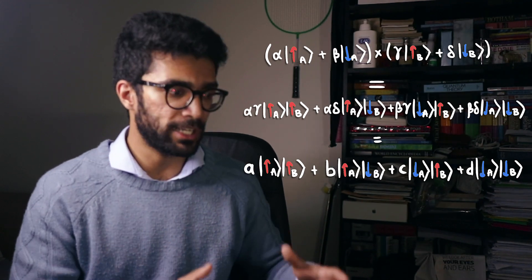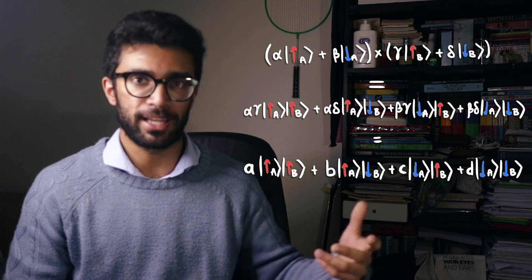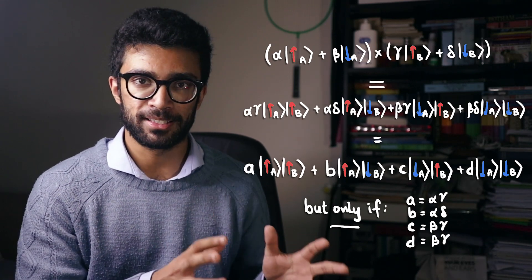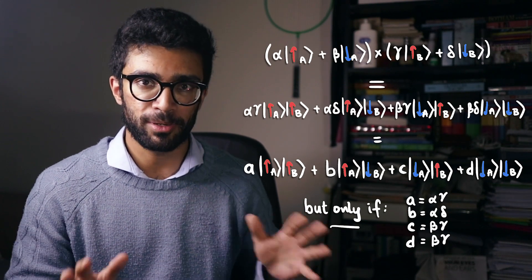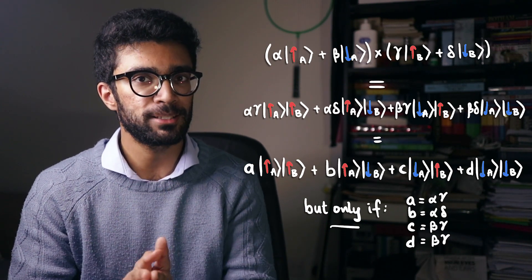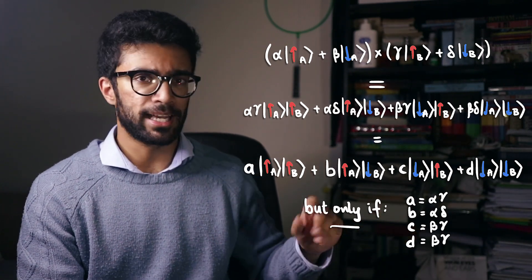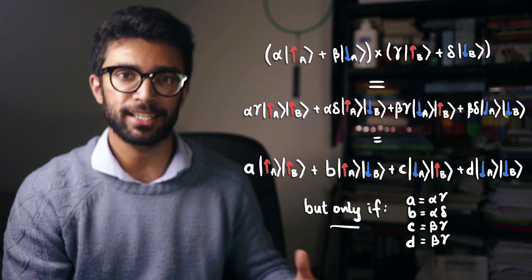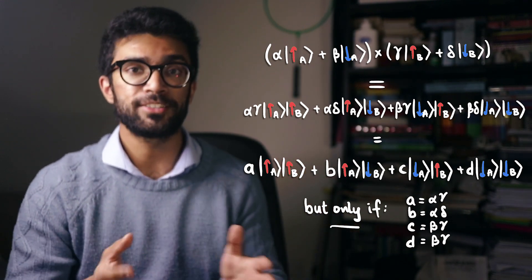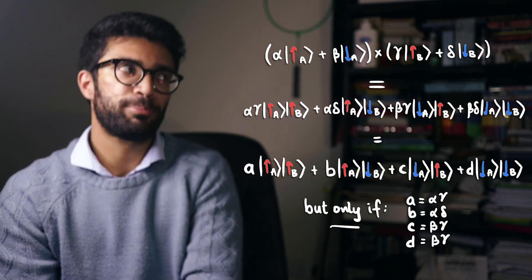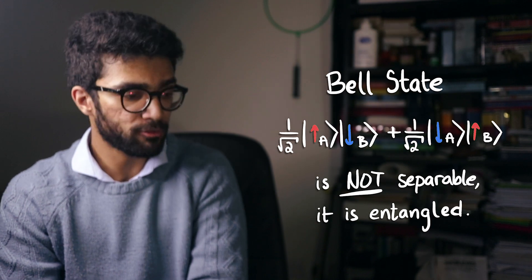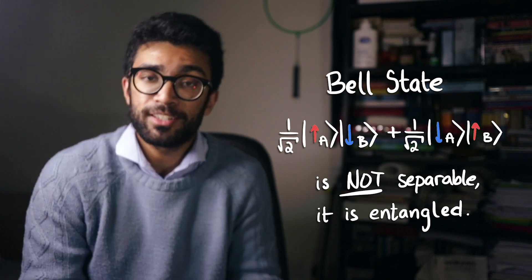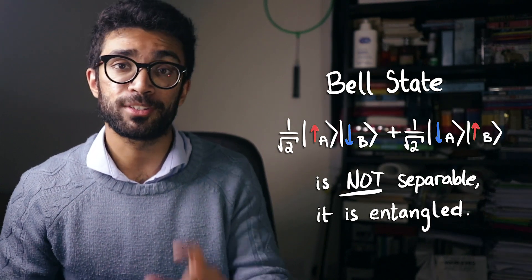Here's the key: we may or may not be able to go backwards and factorize this state into one bracket just talking about particle A and one bracket just talking about particle B. This very specifically depends on the numbers a, b, c, and d — because depending on their values we may or may not be able to factorize. It's not always possible to factorize our state this way; it only happens for separable states. In fact, the Bell state we mentioned earlier is not possible to write in this form — we can't write it as information about particle A solely multiplied by information about particle B solely. Try it yourself. But for now let's discuss one possible entangled state and one possible separable state.